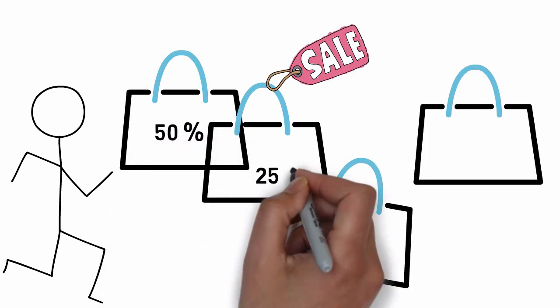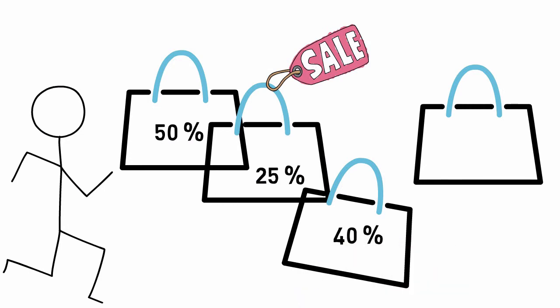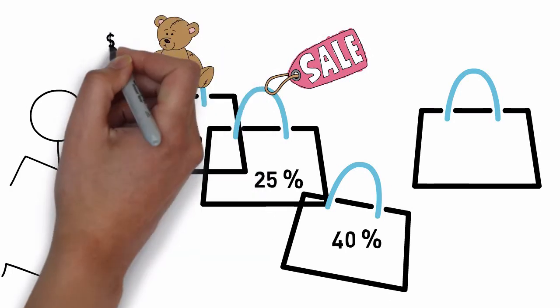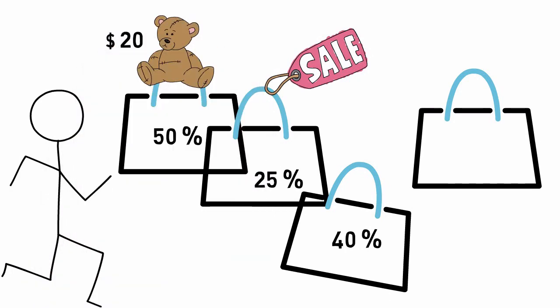50%, 25%, 40% - simple whole numbers. So looking at 50% you can easily calculate how much, for example, this item will cost you after sale, right?